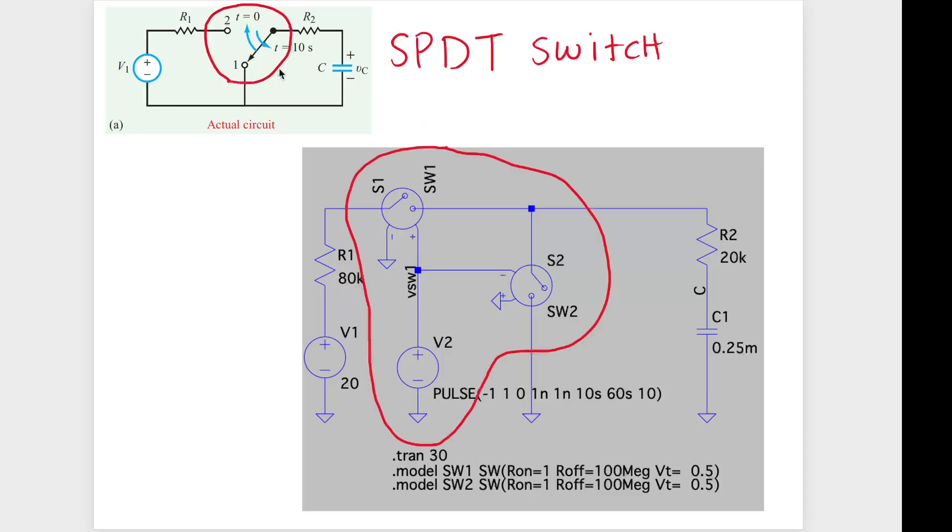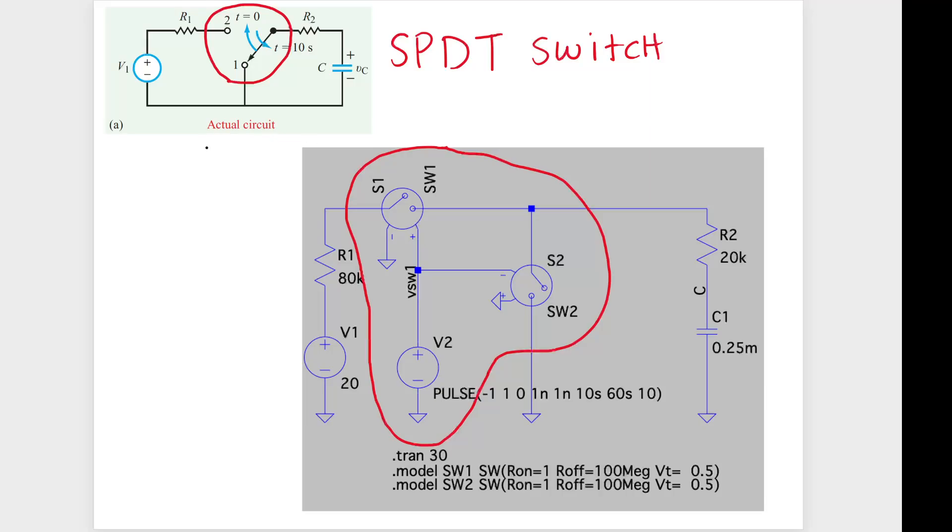Okay, so that single pole double throw switch is modeled by two switches down below. And using this simulation, which will be included at least in my class's Moodle page, you'll be able to check this simulation so that you can work this for other homework problems. Thank you for watching and have a nice day.